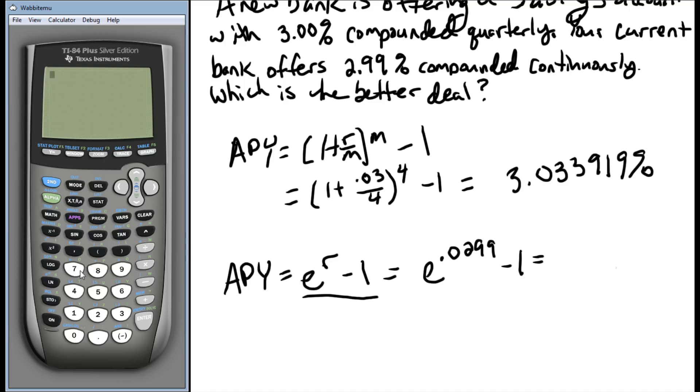E to the 0.0299 minus 1. And in this case, let's multiply this by 100 to get back to our percentage. And we see that our percentage is 3.0351. Well, we don't have to go any further. We can already, let's just round this off at 515%.